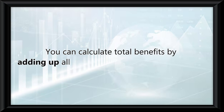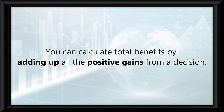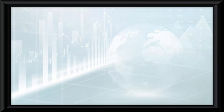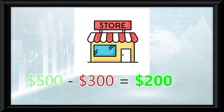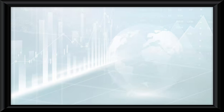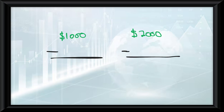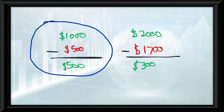This can be illustrated using a table or graph to show the relationship between benefits and costs. You can calculate total benefits by adding up all the positive gains from a decision. Similarly, total costs include all expenses or sacrifices. For instance, if starting a business brings in $500 in revenue but costs $300 in expenses, the net benefit is $200. The optimal choice is where the difference between what you gain and what you lose is the greatest.